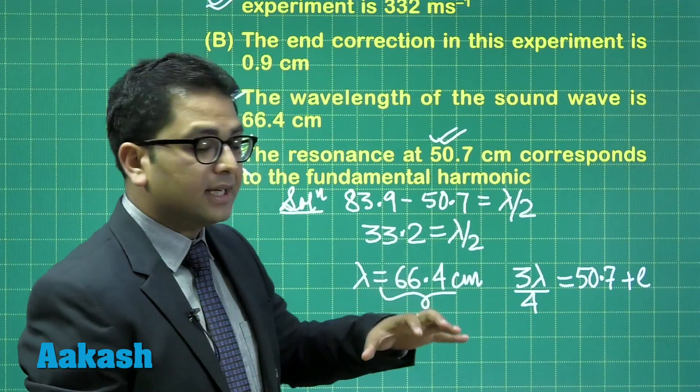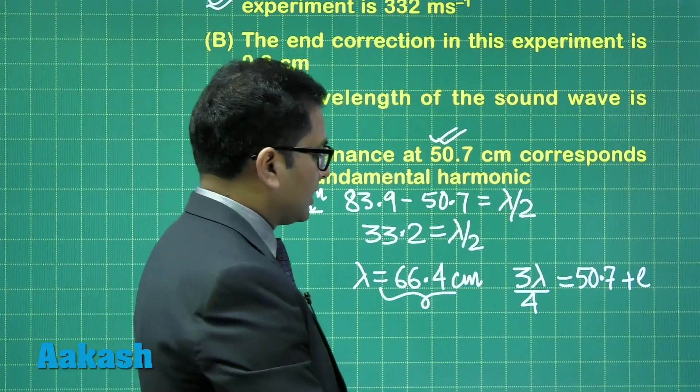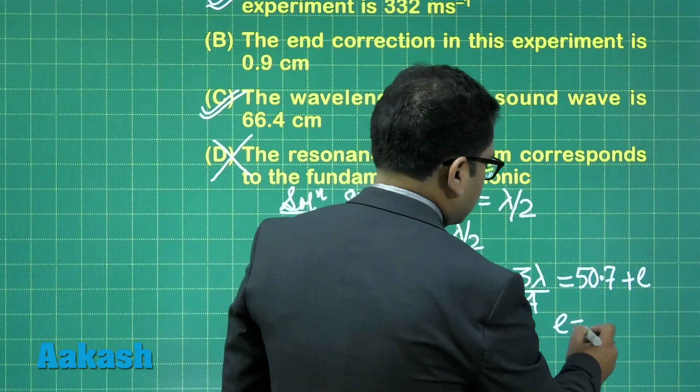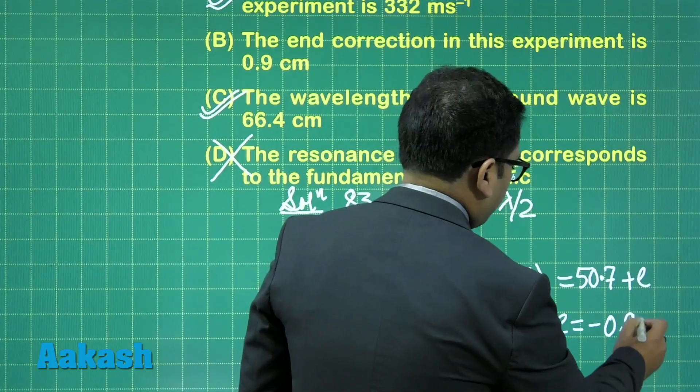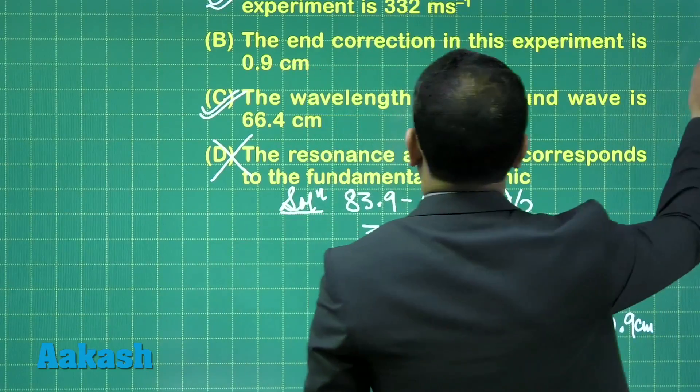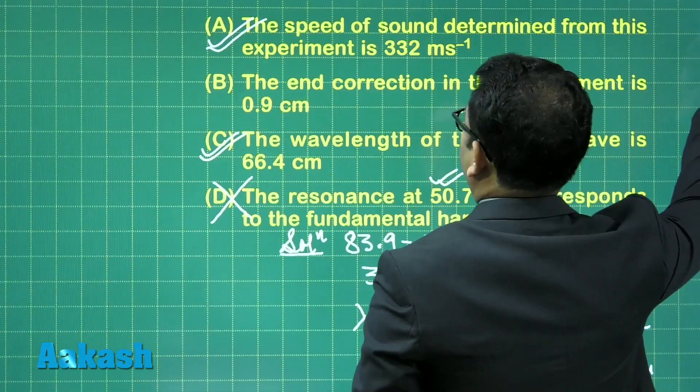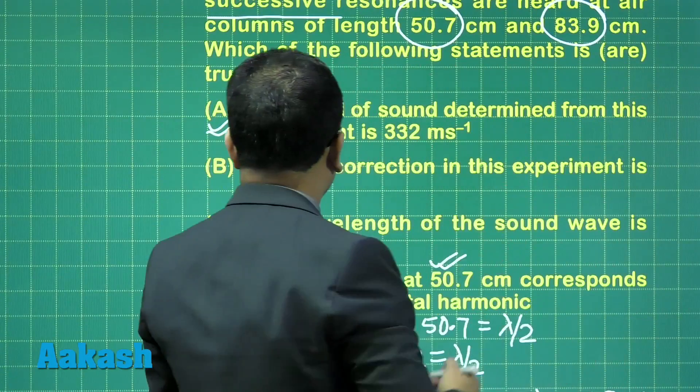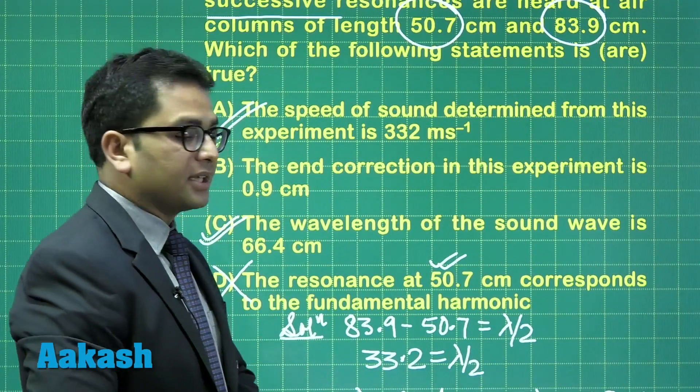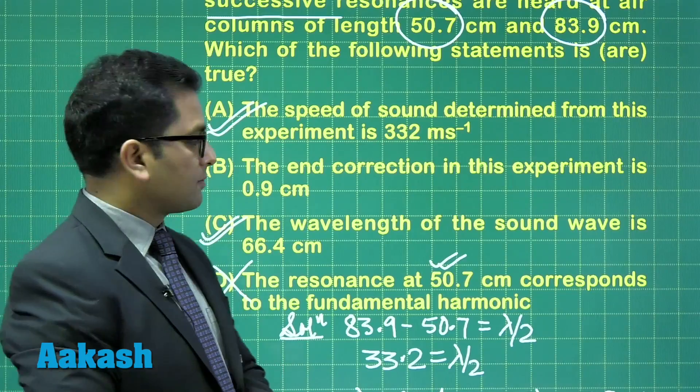And when you calculate the end correction, the end correction comes out to be minus of 0.9 centimeter, while the option B has been given as plus of 0.9 centimeter, so we will not be going with option number B.